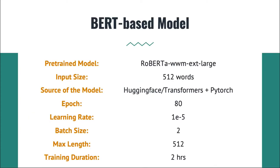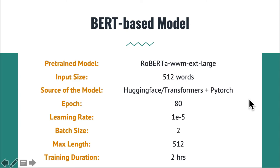Let's go through our implementation details. In the BERT-based model, we use RoBERTa, and each dialogue is cut into units of 512 words, where each word has a corresponding IOB token as a label. We build the model using Transformers and PyTorch. For hyperparameters, we set epochs to 80, learning rate to 1e-5, batch size to 2, max length to 512, with a total of 2 epochs of training.